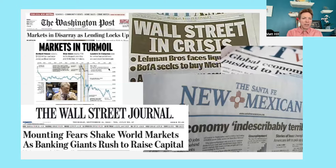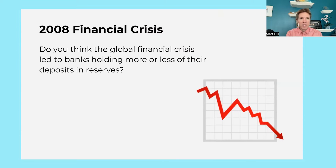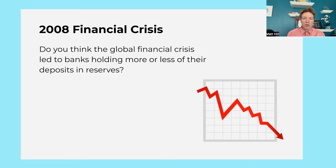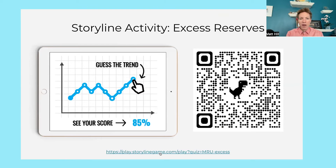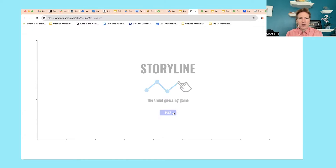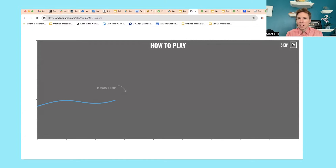So here we have the great financial crisis. Your students are all probably way too young to remember, but this was a big deal. As a bell ringer, ask students: do you think this financial crisis led banks to hold more or less of their deposits in reserves? The correct answer is more — we're kind of unsure about what's happening in the world, so we better hold more money back just in case something bad happens. Then we have a storyline activity, a sort of fun trend-guessing game.